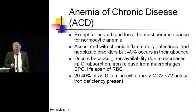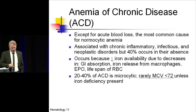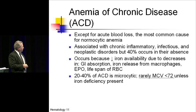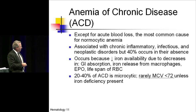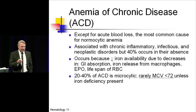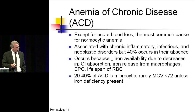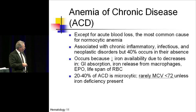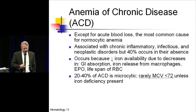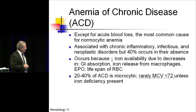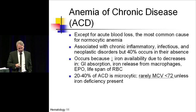Anemia of chronic disease is the most common cause of normocytic anemia, aside from acute blood loss. It is associated with chronic inflammatory and infectious conditions, as well as neoplastic disorders. The pathophysiology involves decreased iron availability due to decreased absorption, macrophages failing to release iron for reutilization, decreased erythropoietin, and a slightly decreased RBC lifespan. About 20% to 40% of the time it can be associated with a low MCV, though rarely less than 72 unless there's a concomitant iron deficiency.